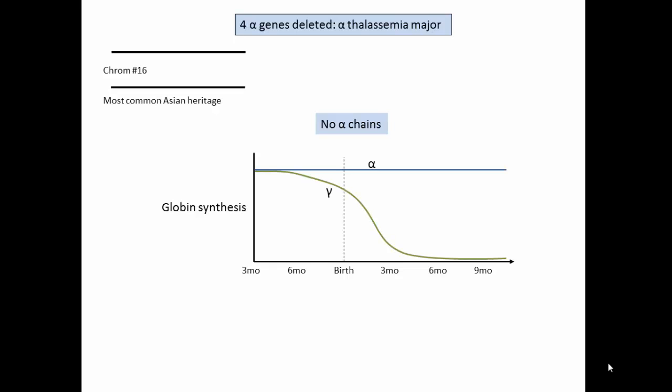Gamma production is high in the fetus, starting to switch off before birth, with beta production taking over from gamma.